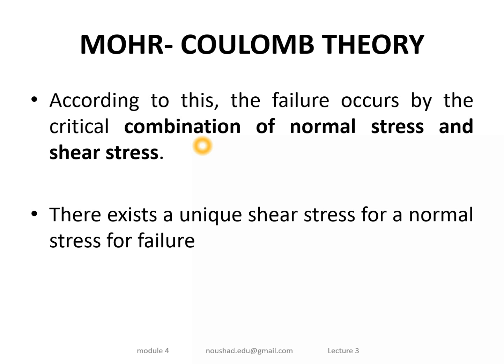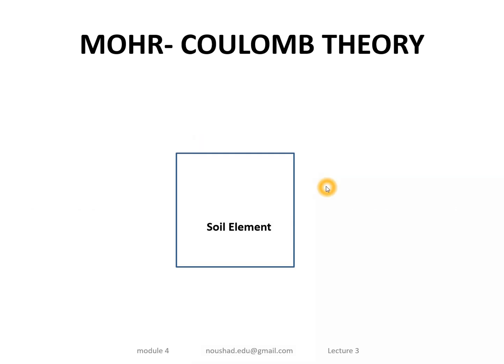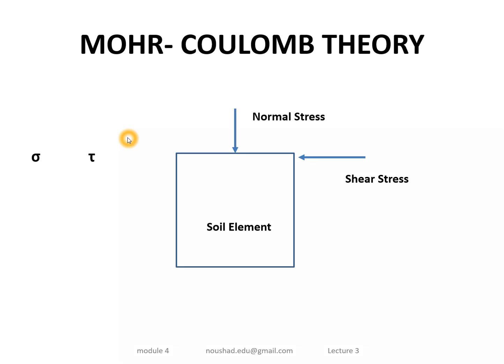The failure occurs when there is a critical combination of normal stress and shear stress. We apply different values of normal stress (sigma) and corresponding shear stress values. For example, if the normal stress is 10 kN/m², the soil element reaches a unique shear stress value at failure.